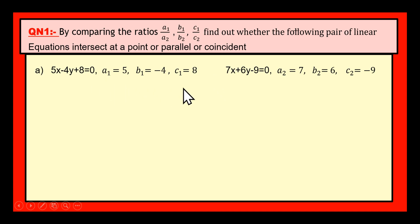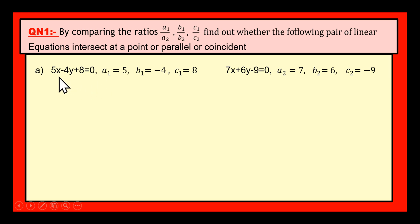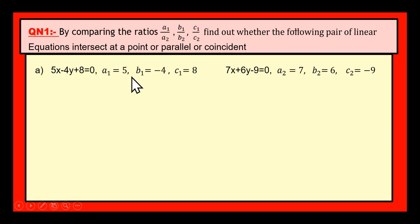These two form a pair of linear equations in two variables. If you observe the first equation, it is in the form of A1x plus B1y plus C1 equal to 0, where A1 is the coefficient of x equal to 5, B1 is the coefficient of y equal to minus 4, and C1 is the constant term equal to 8.